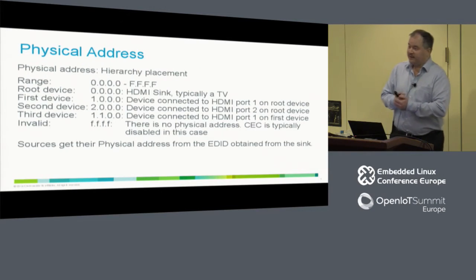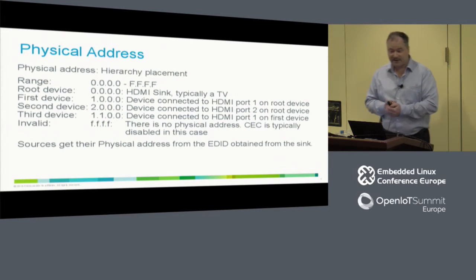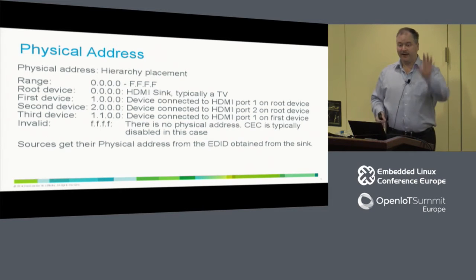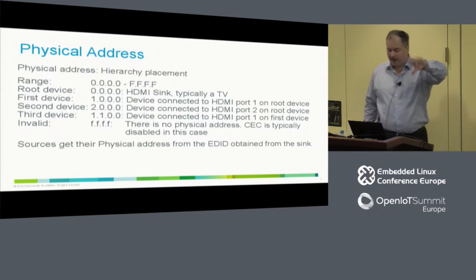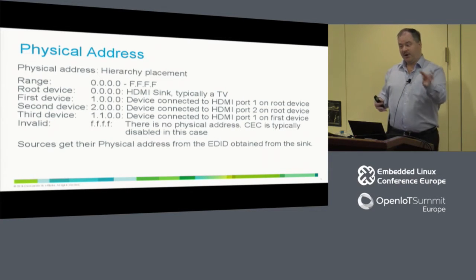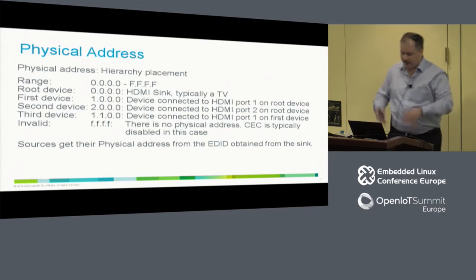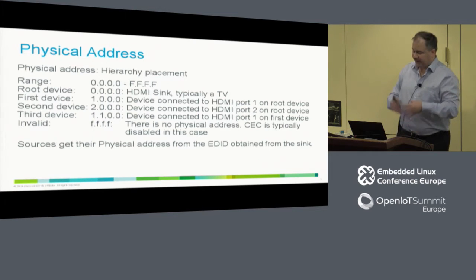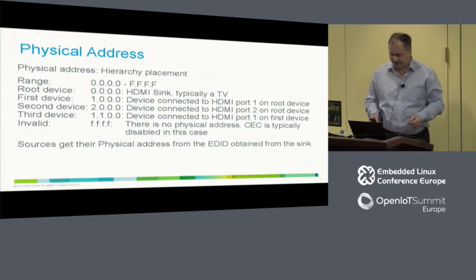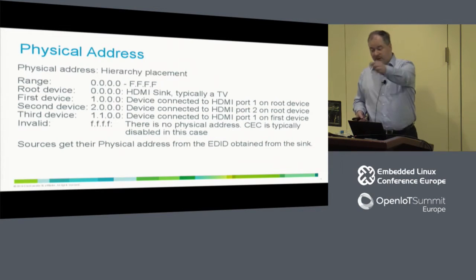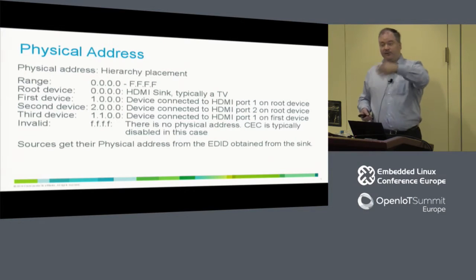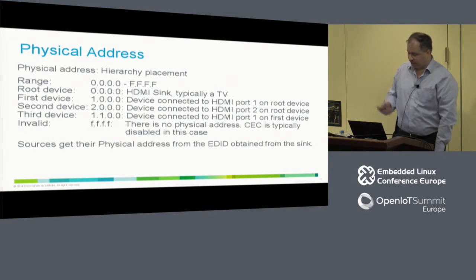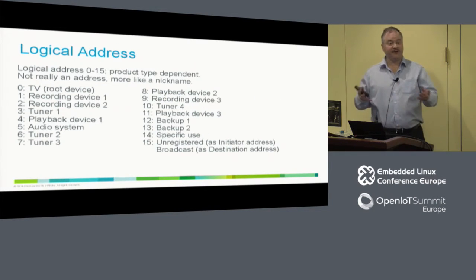Every CEC device has a physical address — a two-byte number with four nibbles, where each nibble is a topology identifier. At the top level the TV is always 0.0.0.0. If a TV has multiple inputs, they will be 1.0.0.0, 2.0.0.0, etc., and one level below that you get 1.2.0.0, etc. Invalid — typically meaning no CEC — is FFFF. When you connect your PC to a TV, you read out the EDID, and the EDID gives you the physical address assigned to you. You don't make it up yourself, except if you're a TV, because then it's hard-coded.